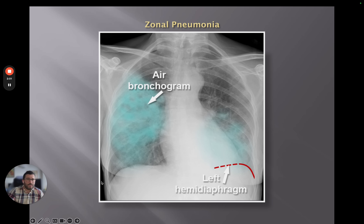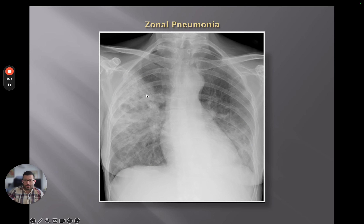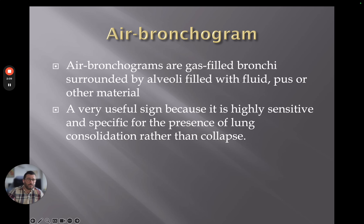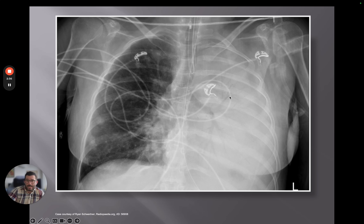Here we can see air bronchograms running through the consolidation — not only do we have the consolidation, but we can see gas-filled bronchi surrounded by the infiltrated alveoli. Whether it be fluid, pus, or other material, this is a very useful sign because it is highly sensitive and specific for the presence of consolidation rather than collapse. We'll describe this as a complete whiteout of the left lung with air bronchograms consistent with consolidation, with some further patchy shadowing throughout the right lung.